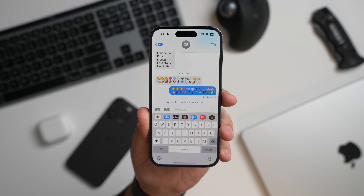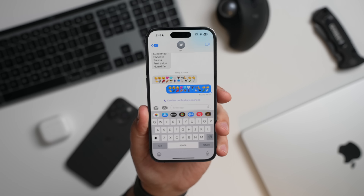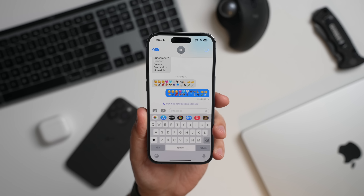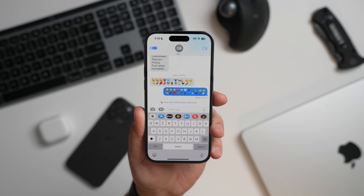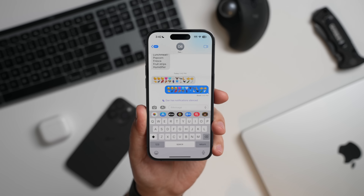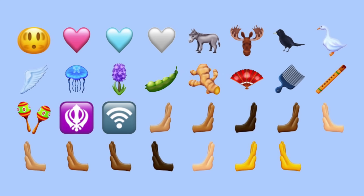Starting off with everyone's favorite new emojis — there are 21 new emojis in all. Some of these include a shaking head, ginger, pink, blue, and gray hearts, a donkey, a moose, a jellyfish, a comb, and more.